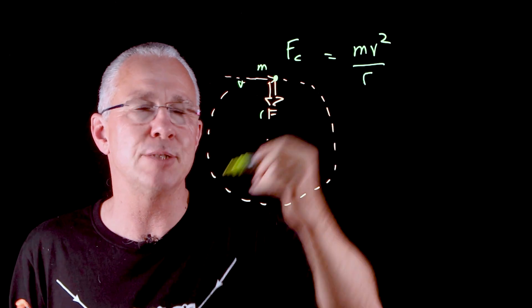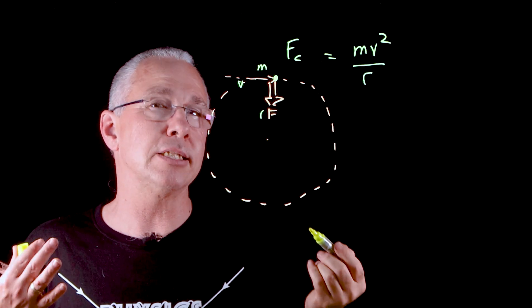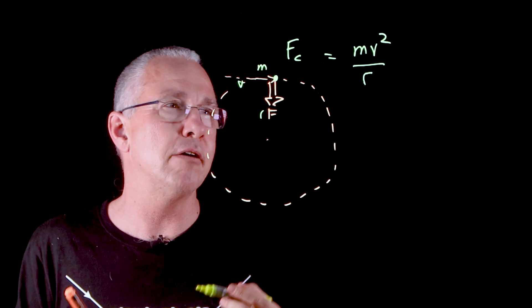Clearly, second law suggests that if I divide this by M, I get the centripetal acceleration, which is just V squared over R.